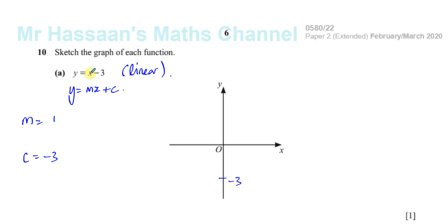that this line definitely passes through the point minus 3 on the y-axis, because when x equals 0, y equals minus 3. And I know that it has a gradient of 1.